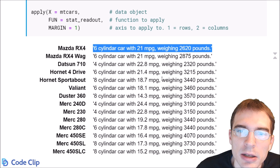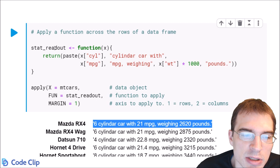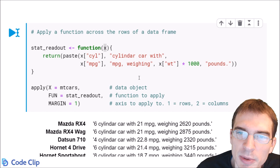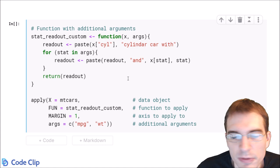Now in our first two examples, the functions we ran only took a single argument. You can see here stat readout only required one argument x. But you can pass additional arguments to apply as well if your function needs that. So we'll just show how to do that below.